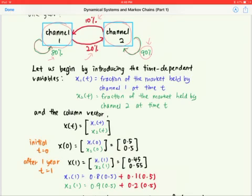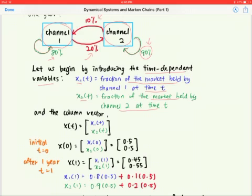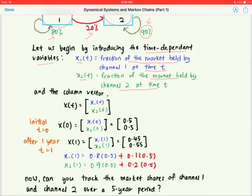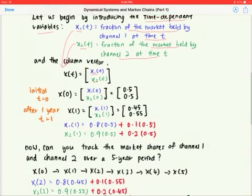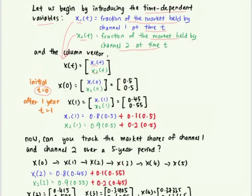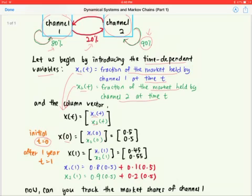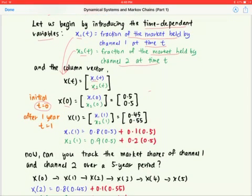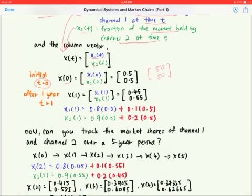Because this is a dynamic system, the state of the parameters changes with time, so we introduce time-dependent variables. Let x1 be the fraction of the market held by channel 1 at a particular time, and x2 be the fraction held by channel 2. The initial condition at time t=0 is the column vector [0.5, 0.5]. After one year, the market shares become 0.45 for channel 1 and 0.55 for channel 2.